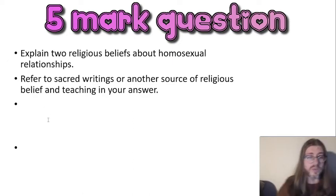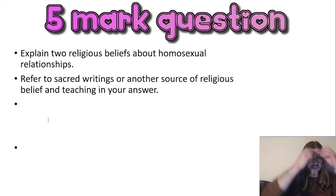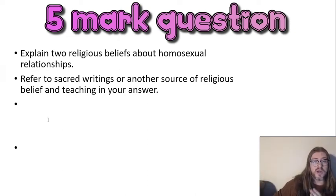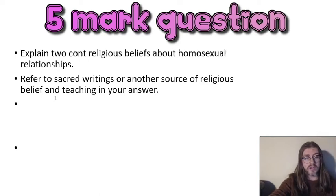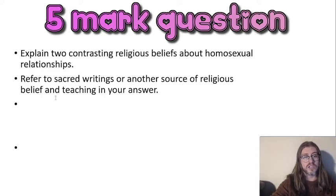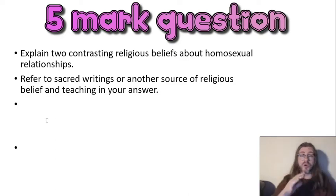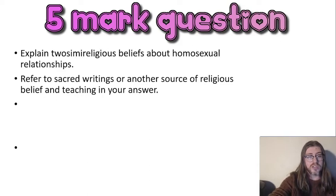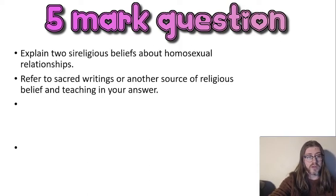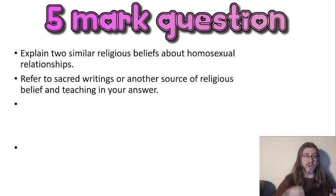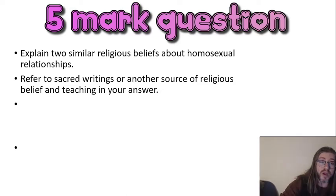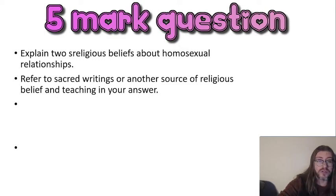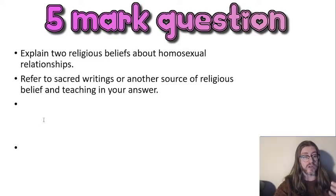So if we have a look at a five mark question - it's not that difficult. It's a five mark question explaining two religious beliefs about homosexual relationships. It could become 'two contrasting religious beliefs' meaning two opposite sides, or it could be 'two similar religious beliefs' meaning two reasons you agree with it. I'm going to do one in favour and one against because I think that shows the strength of the arguments.